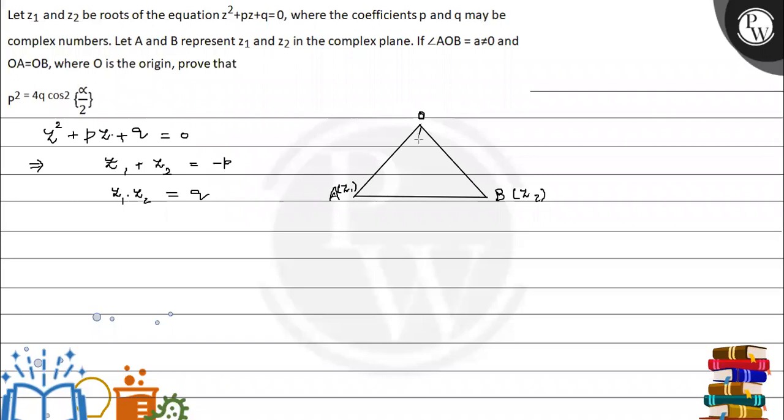We can see this angle was given here to be alpha, and also OA is equal to OB. So this triangle is an isosceles triangle.